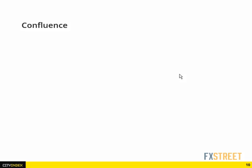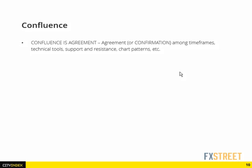Confluence is very important in my trading. Confluence is agreement or confirmation among many different tools. For example, I'll use a Fibonacci level, a support-resistance level, a moving average, and a trend line or indicator. The more these tools agree with each other — and this includes different timeframes — the higher the probability of the trade it tends to be.